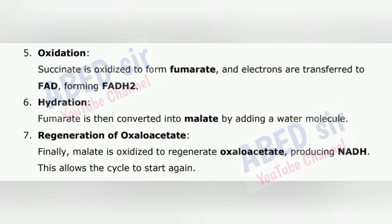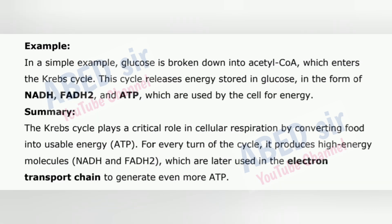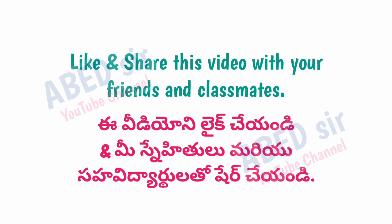6. Hydration – fumarate is then converted into malate by adding a water molecule. 7. Regeneration of oxaloacetate – finally, malate is oxidized to regenerate oxaloacetate, producing NADH. This allows the cycle to start again. For example, glucose is broken down into acetyl-CoA, which enters the Krebs cycle. This cycle releases energy stored in glucose in the form of NADH, FADH₂, and ATP, which are used by the cell for energy. The Krebs cycle plays a critical role in cellular respiration by converting food into usable energy (ATP). For every turn of the cycle, it produces high-energy molecules NADH and FADH₂, which are later used in the electron transport chain to generate even more ATP.